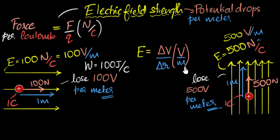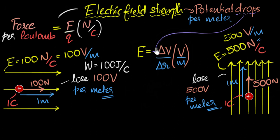Now, this equation is not complete yet. We need to be careful: the number is saying how much potential you're losing as you go forward — it's a drop. If I just write delta V, it represents how much potential is gained. But we are saying it's how much potential is lost, and for that reason we put a negative sign. If your electric field is positive and you also move in the positive direction — delta R is also positive — you're losing potential. So delta V has to be negative, and therefore we have a negative sign: E = −ΔV/ΔR.